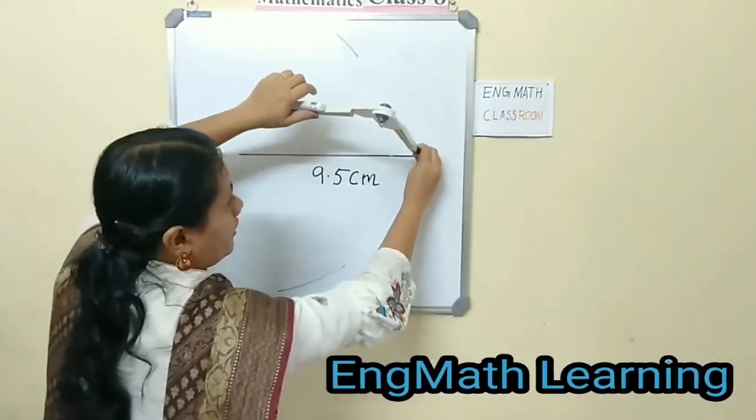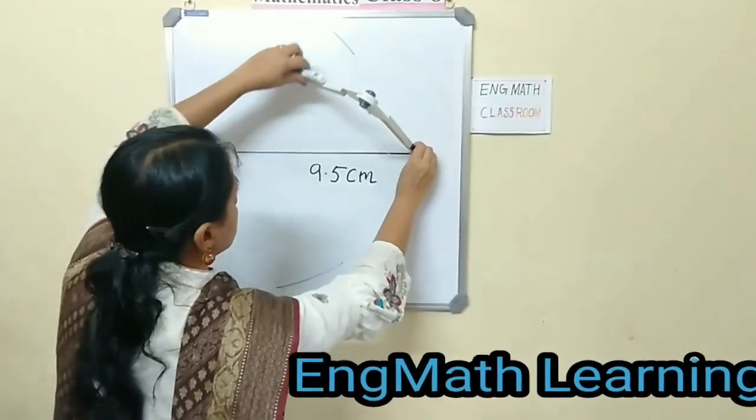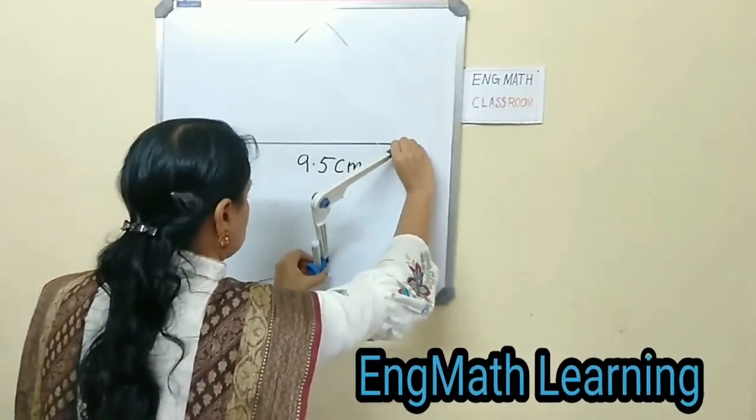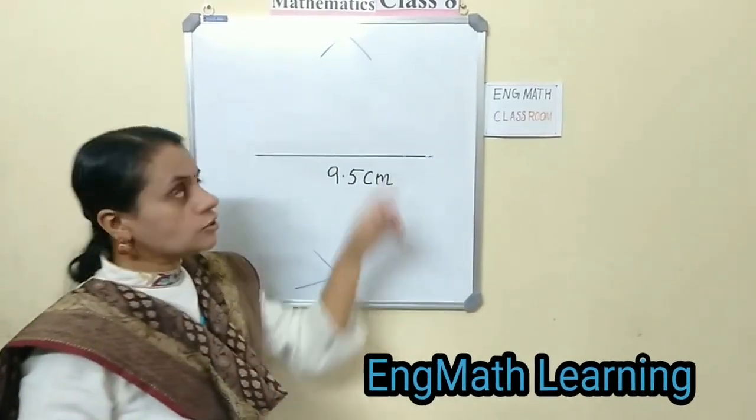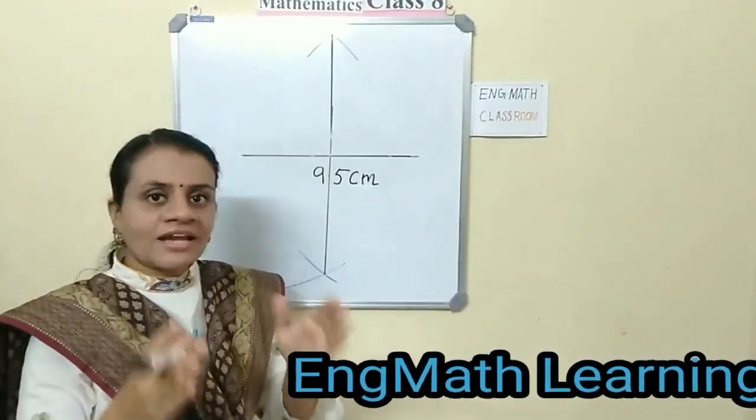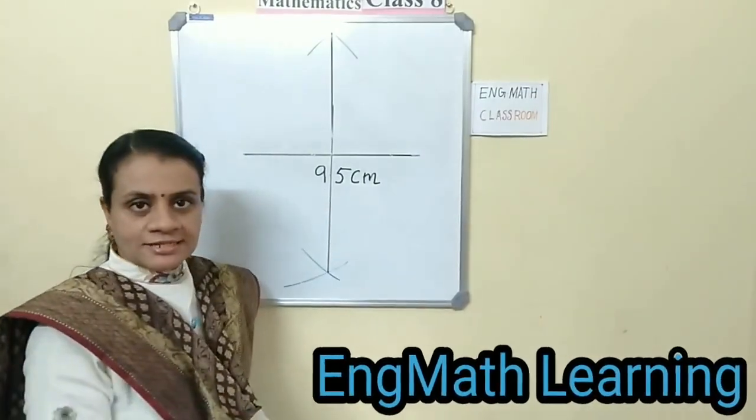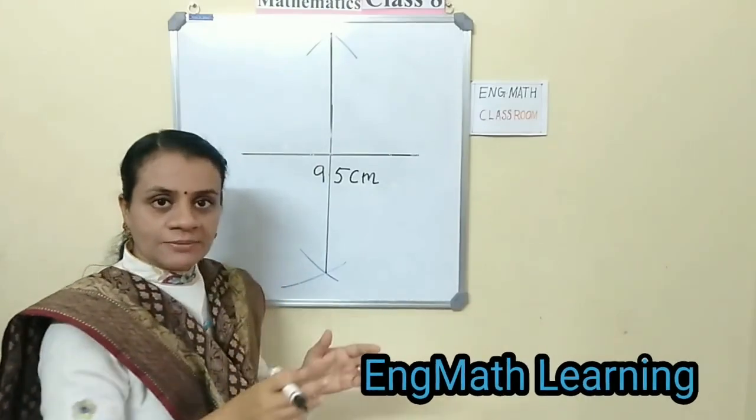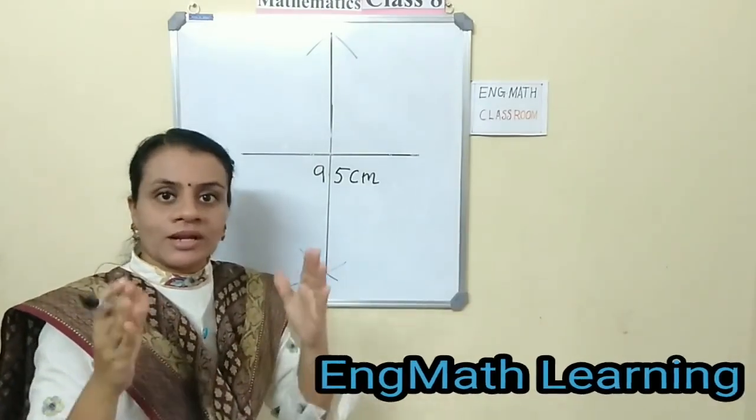At the upper side and also lower side. At another endpoint, cut an arc. And join these two intersecting arcs, drawing the perpendicular bisector. We divide 9.5 cm into 2 equal halves.